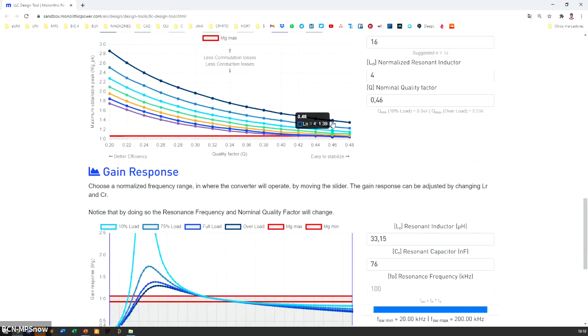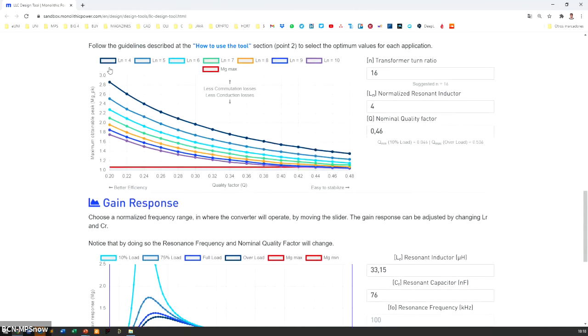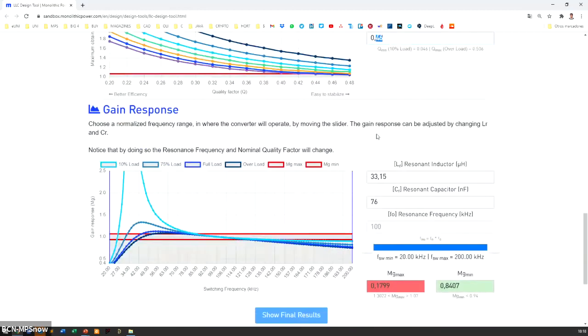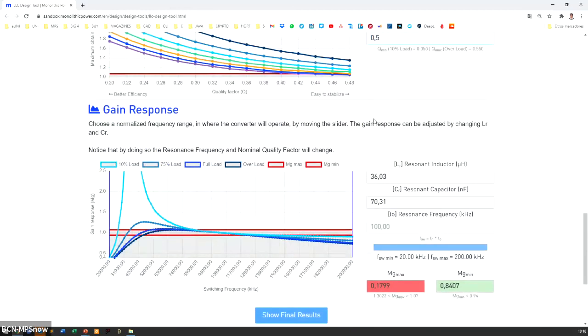This is where the LLC tool becomes very useful because you can see how the frequency response changes with different values just by clicking on the graph. At this point, the recommended values are Ln between 4 and 8, and regarding the quality factor, between 0.3 and 0.5. In our reference design, we have used Ln equal to 7 and Q equal to 0.5.